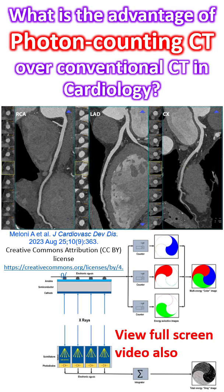The individual conventional CT detector cells are divided by optically opaque layers called septa. These are inactive areas of the detector surface causing loss of efficiency. Instead of the two-step conversion in conventional CT, photon counting CT uses direct conversion using a layer of semiconductor.